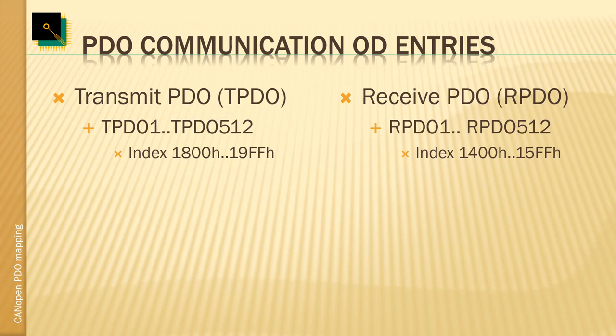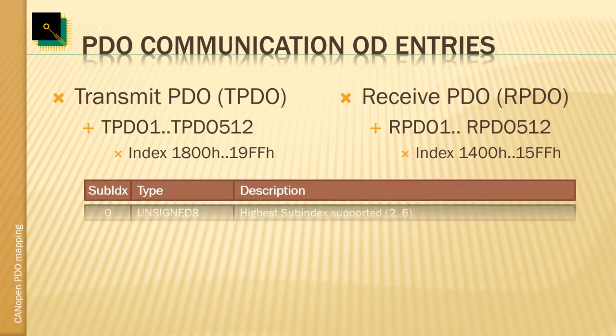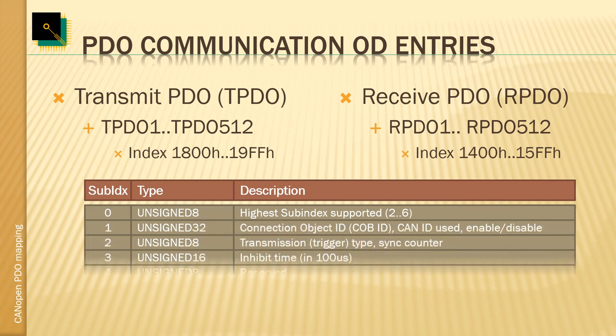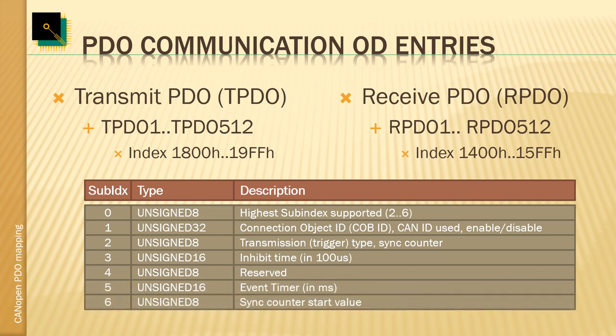The parameters for the communication settings are put together into a data record so that we have various subindexes. These include at subindex 1 the COPID — that's the CAN ID used — along with a bit for enabling or disabling the PDO. Then we have a transmit trigger type. And the times mentioned earlier: the inhibit time and the event time at subindex 3 and 5. The last value available is at subindex 6, a sync counter start value.